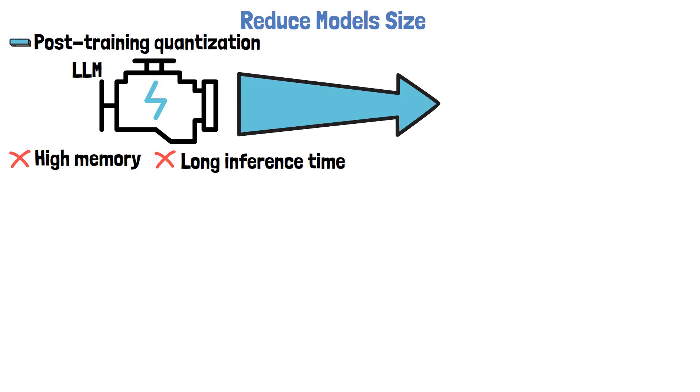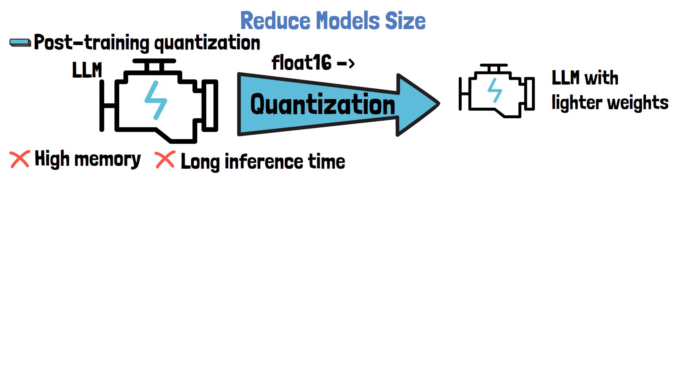Quantization in machine learning usually refers to the process of reducing the precision of the model weights, for example converting the model weights from float16 to int8, so each weight is 1 byte in memory instead of 2. This way the models consume less memory and run faster. This however many times comes with a decrease in the model accuracy.